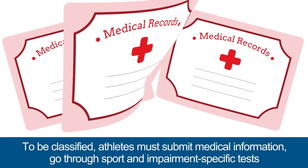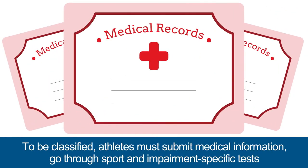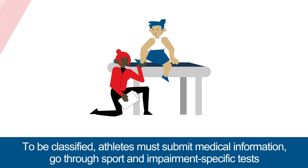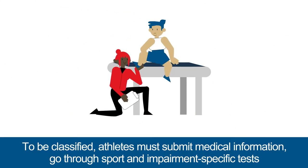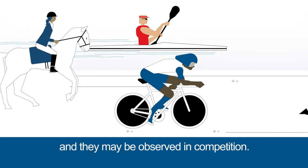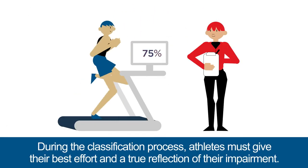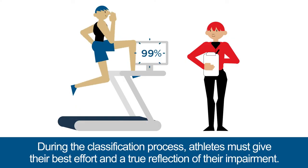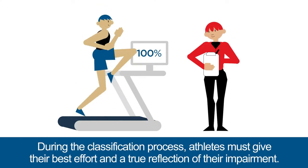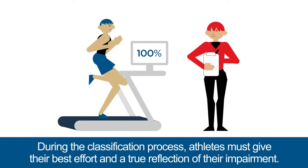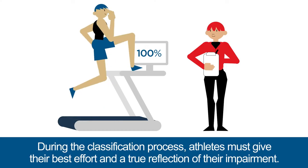To be classified, athletes must submit medical information, go through sport and impairment-specific tests, and they may be observed in competition. During the classification process, athletes must give their best effort and a true reflection of their impairment.